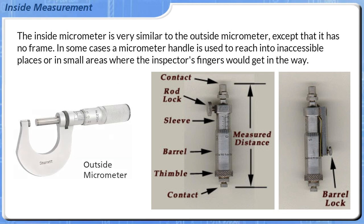The inside micrometer is very similar to the outside micrometer, except that it has no frame. In some cases a micrometer handle is used to reach into inaccessible places or in small areas where the inspector's fingers would get in the way.